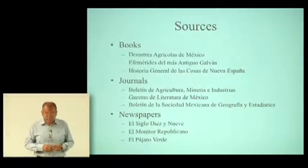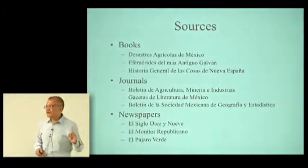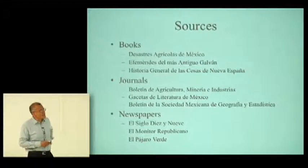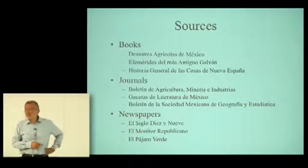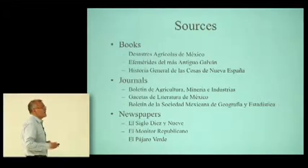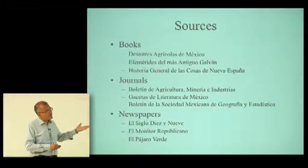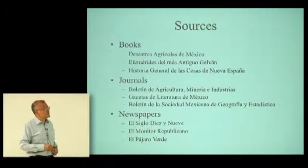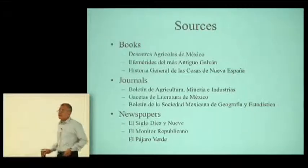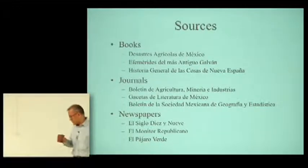Let's see what the sources are. I started with an event that occurred in 1521, so of course the sources are going to be scarce — they are mainly books. These are compilations of agricultural disasters in Mexico from before the Spanish conquest to the 19th century, and this is a compilation of everything that happened in the country from independence to the mid-20th century. There are also many books on anthropology and archaeology that refer to these phenomena.